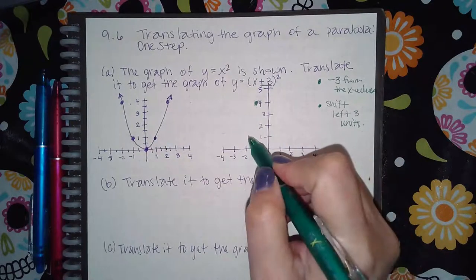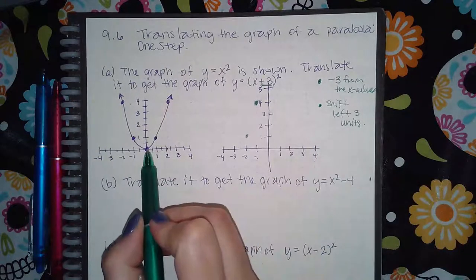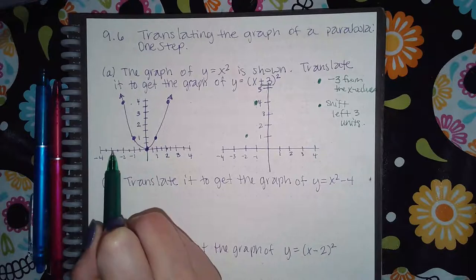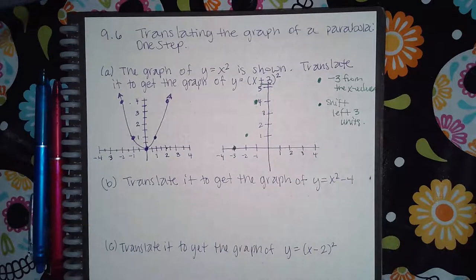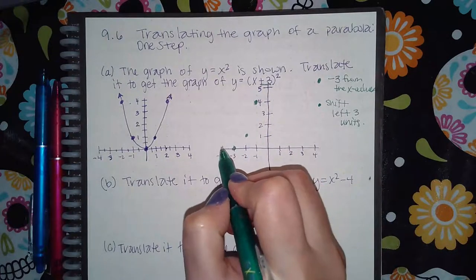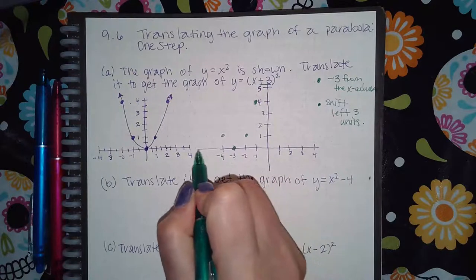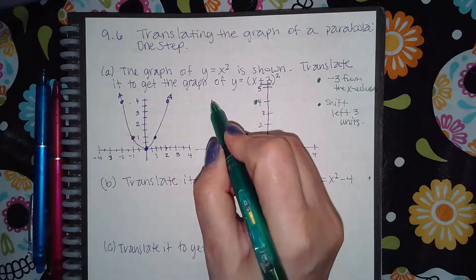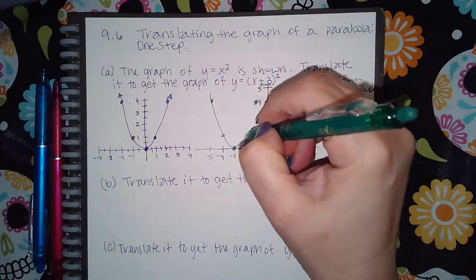Then the x value one: one minus three is negative two, so the point (1, 1) is now at (negative 2, 1). Similarly, the point (0, 0) subtract three gives x of negative three, y stays zero. Negative one minus three is negative four. We still need one more point: at x equals negative five, y equals positive four. And so we get this new parabola.